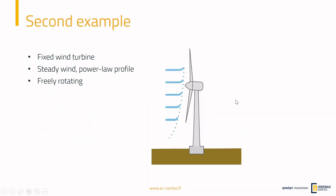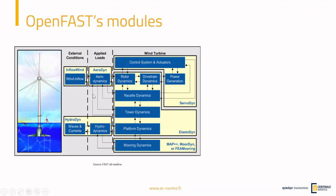Today we will learn a new module with this simulation. We will simulate a fixed wind turbine in a steady wind with a power law profile. This is the profile of the wind that will be coming to the turbine, and the turbine will be freely rotating — which means there is no generator for now, but it will just rotate in the wind. For this example we will need new modules. Last time we only used the ElastoDyn module, which modelled the platform, the tower and the nacelle.